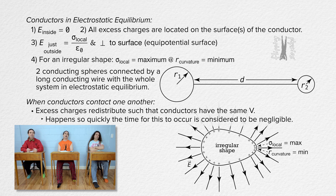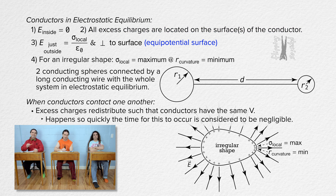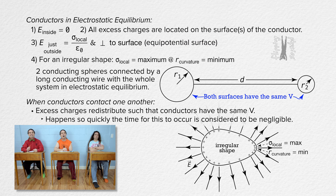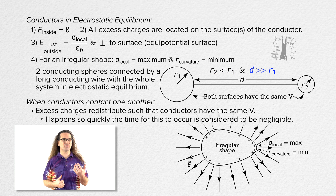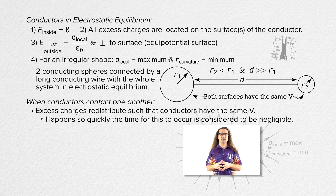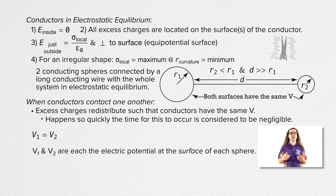Both conductors have the same electric potential because all the charges are on the surfaces of the conductors in electrostatic equilibrium, and the surfaces of conductors in electrostatic equilibrium are equipotential surfaces. So when two charged conductors touch one another, the excess charges redistribute themselves to make it so both conductors are at the same electric potential. For our example, the radius of sphere 2 is smaller than the radius of sphere 1, and the distance d between the two spheres is much, much larger than either radius. Because this is a conductor in electrostatic equilibrium, the electric potential on the surface of each sphere has the same value, of the Coulomb constant times charge all over the radius of each sphere.